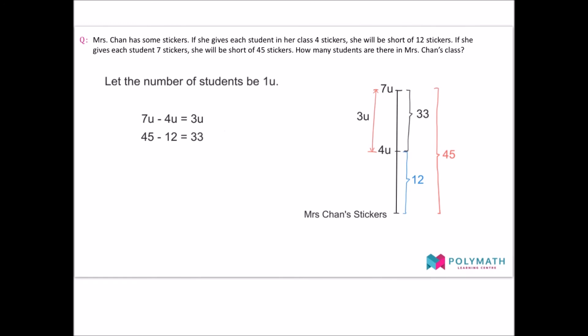Since three units are equal to 33, we can find the value of one unit by dividing 33 by 3. This gives us the answer, as the question now asks for the number of students, which is equal to one unit, instead of asking for the number of stickers that Mrs. Chan has. That is all we have for you today — thank you for your time. Please do subscribe and like the video if it has helped you, and I will see you in the next one. Goodbye!